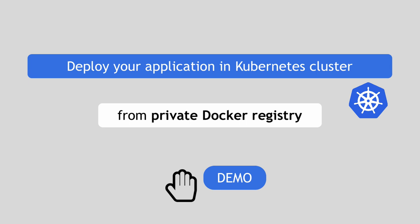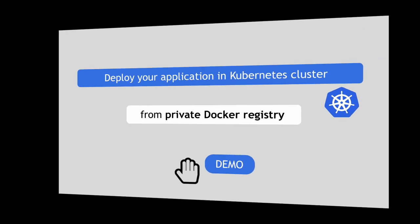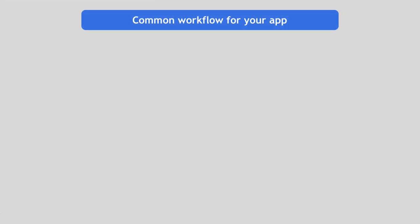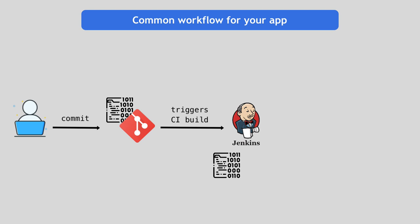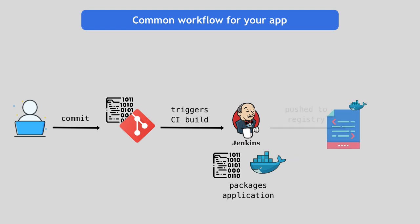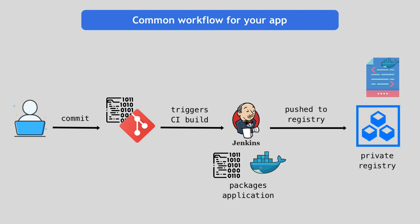In this video, I will show you how to deploy your own application in a Kubernetes cluster. Let's look at a common setup: you commit your code to Git, that triggers a Jenkins build that packages your application with its environment configuration into a Docker image, which then gets pushed to a Docker registry — this can be Nexus, AWS Container Registry, or some other private Docker repository.